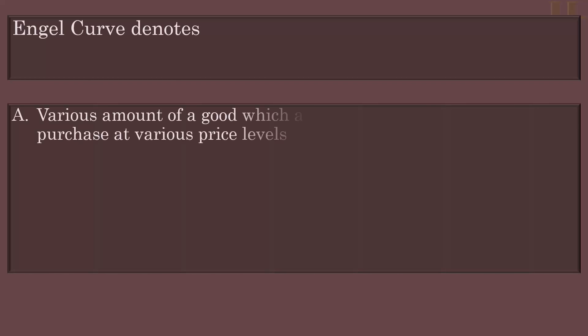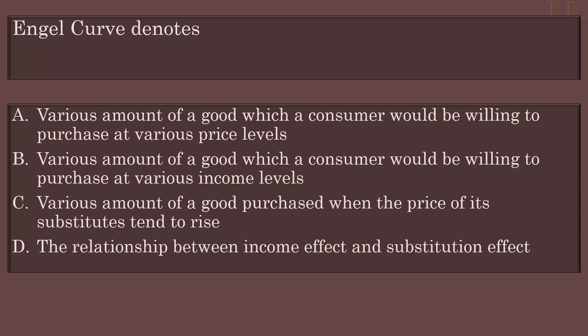Various amounts of a good which a consumer would be willing to purchase at various income levels. Various amounts of a good purchased when the price of its substitutes tends to rise. The relationship between income effect and substitution effect.